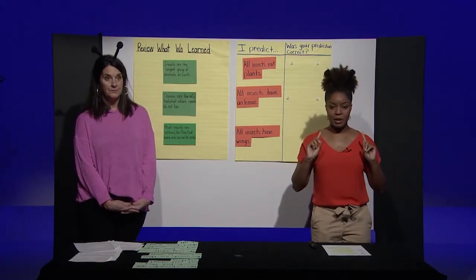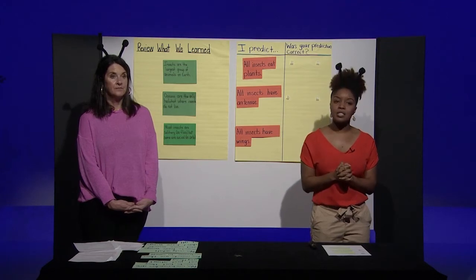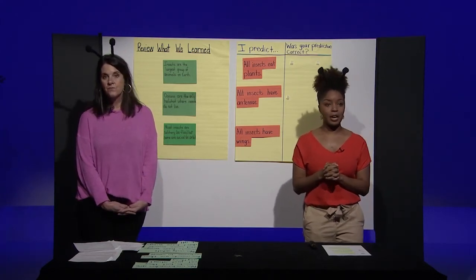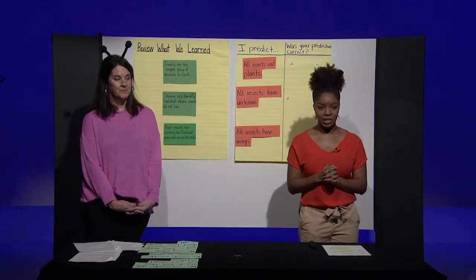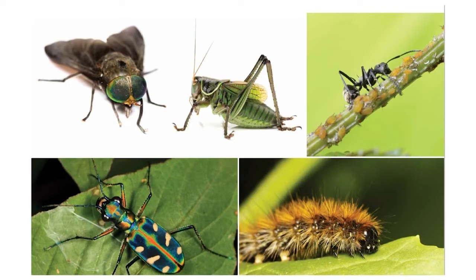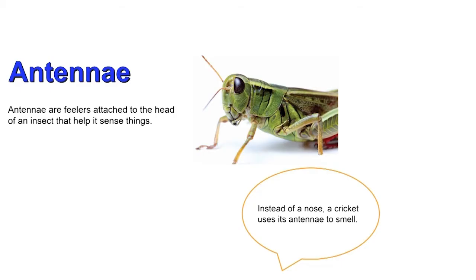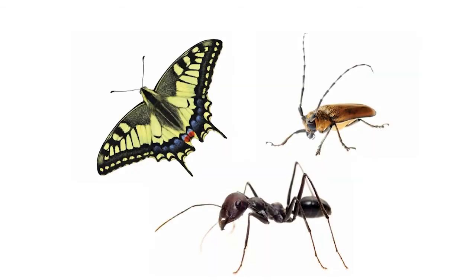We're going to read a little later and find out if our predictions are correct. Before we get into our read aloud, we're going to talk about some vocabulary words that will help us understand it. My first vocabulary word is antenna. Antenna are those feelers attached to the head of an insect that help it sense things. Instead of a nose, a cricket uses its antenna to smell. Can you find the antenna on these insects? Awesome job — you guys are so smart.